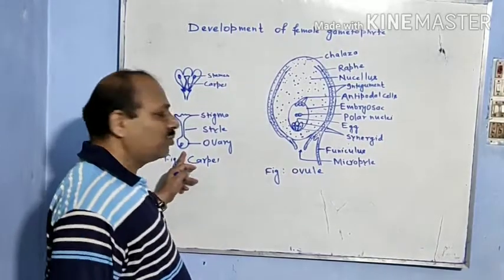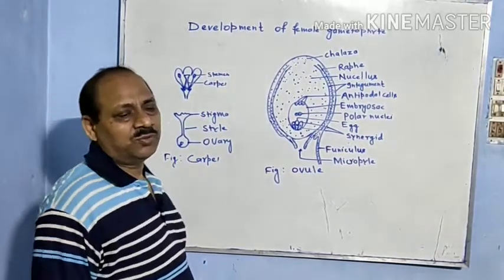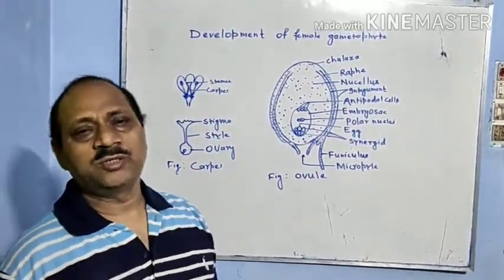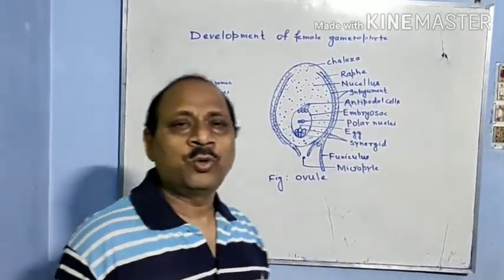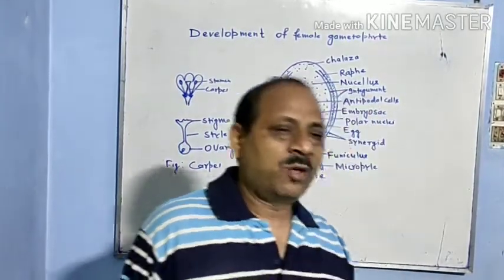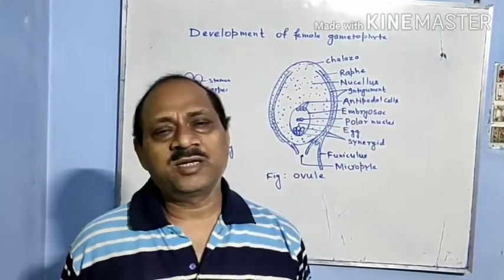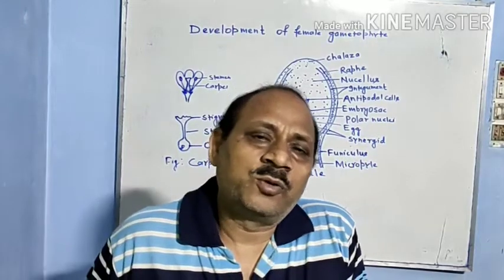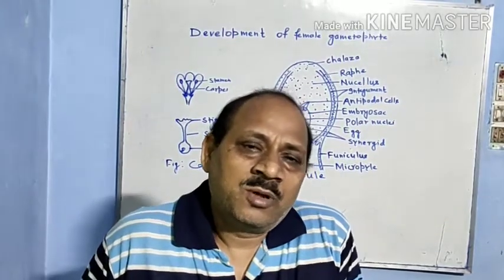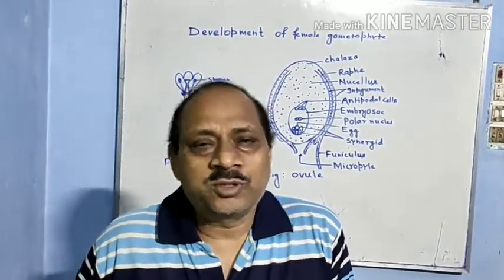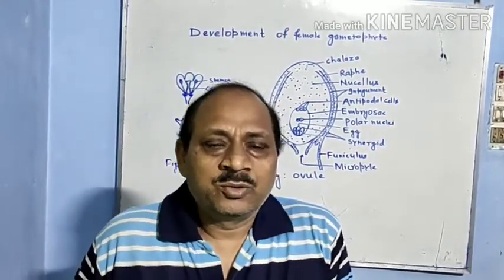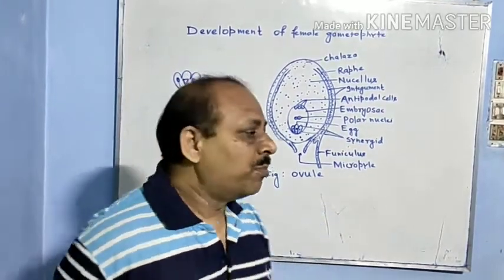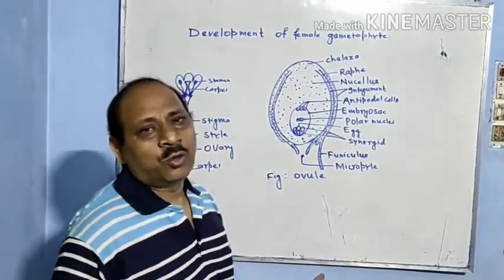The ovary may contain one chamber, then it is known as monolocular. When it contains two chambers, it is known as bilocular. When it contains more than two chambers, it is known as multilocular.